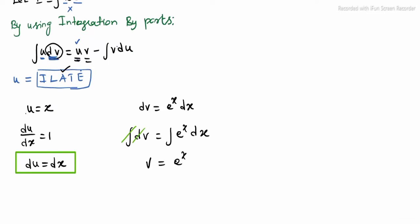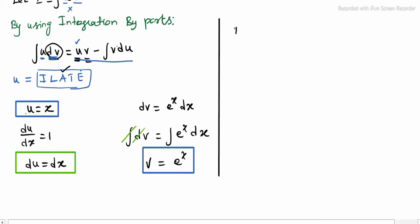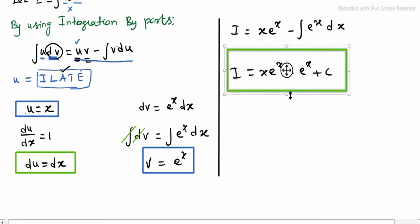Now we have u and v values. Apply the formula: i equals uv minus integrating v du. So i equals x into e power x minus integrating e power x into dx. Integrating e power x gives e power x. Therefore, the answer for sub-division 1 is x into e power x minus e power x plus c.